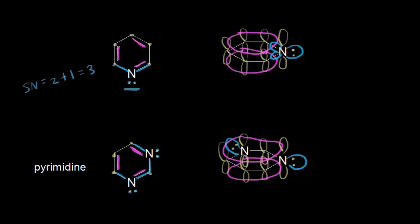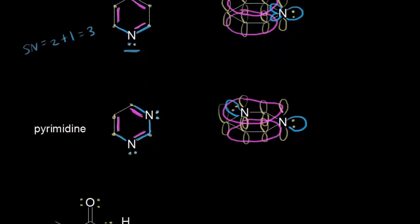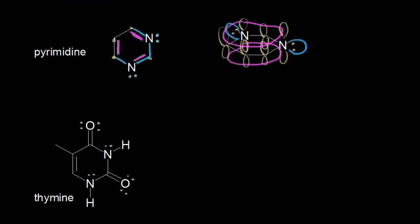The pyrimidine general structure is actually very important in biochemistry. Here's an example: the thymine molecule, which is found in DNA. Textbooks always say thymine has a pyrimidine ring, but at first it's not obvious. Looking at the top nitrogen in thymine, it has three sigma bonds and one lone pair of electrons, giving a steric number of four — four hybrid orbitals would mean sp3 hybridization. If it were sp3 hybridized, there would be no p orbital for aromaticity, so this must not be the case. There must be a way to see the pyrimidine ring here.